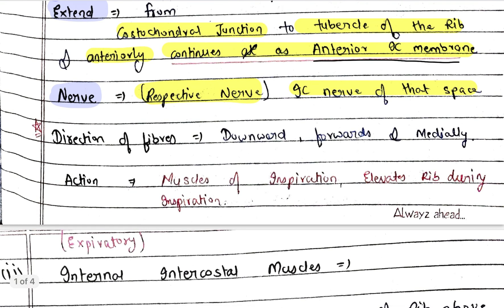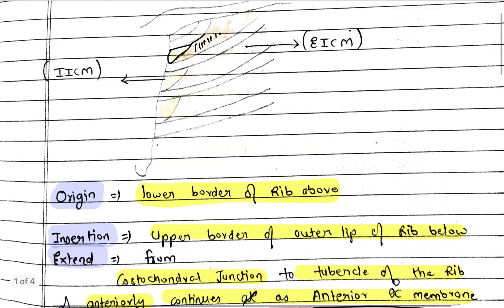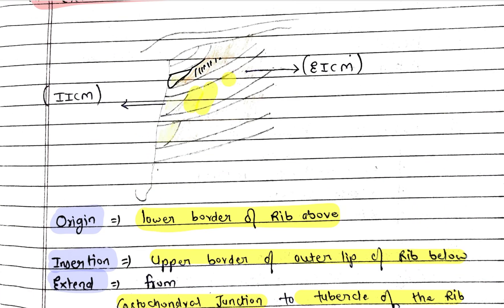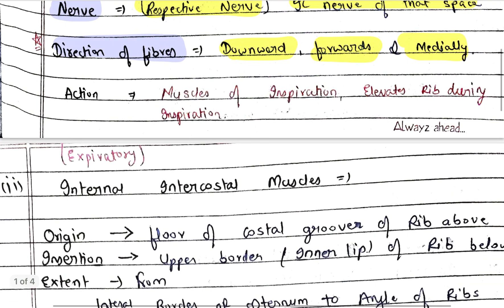Direction of fibers: downward, forward, and medially. Action: the external intercostal muscle is a muscle of inspiration — it elevates the ribs during inspiration.